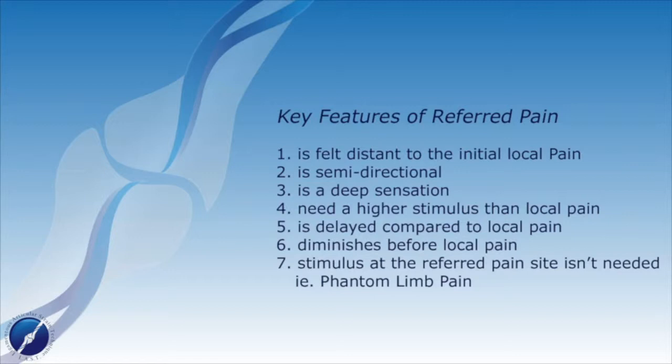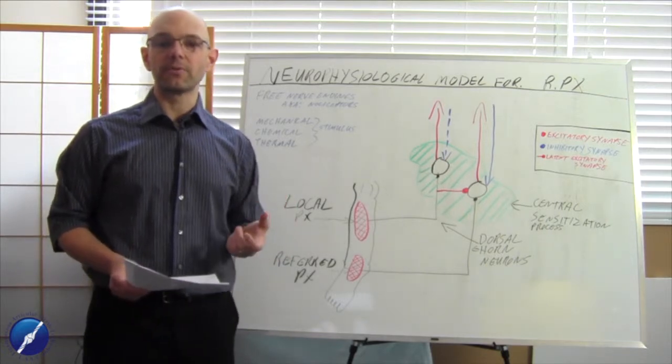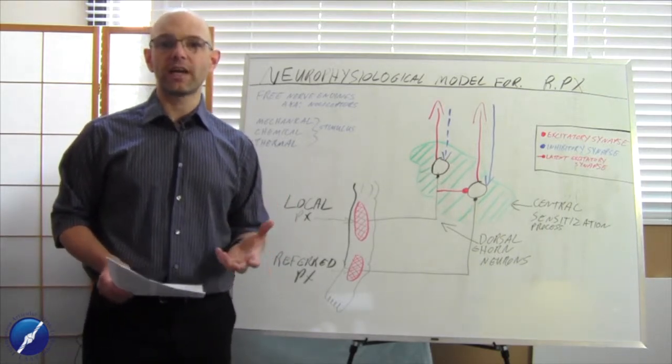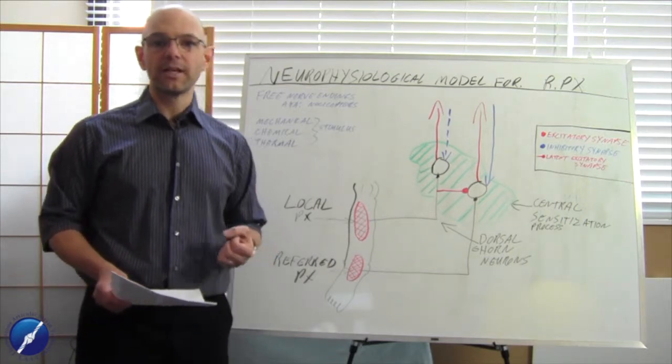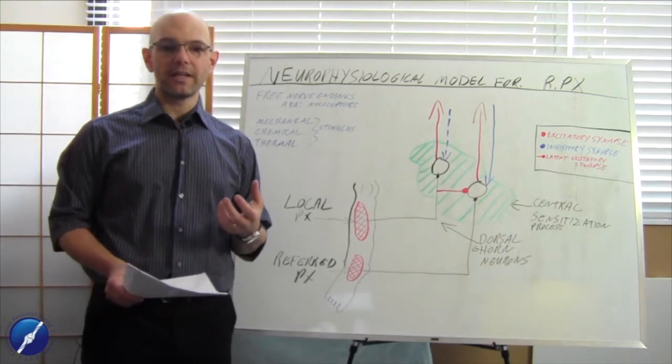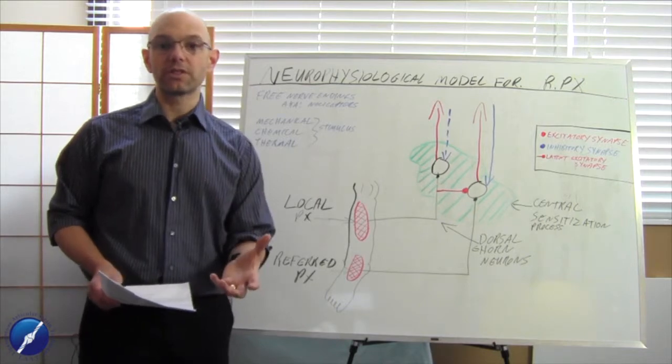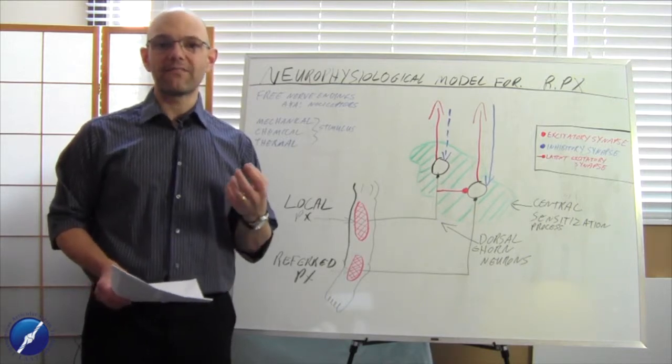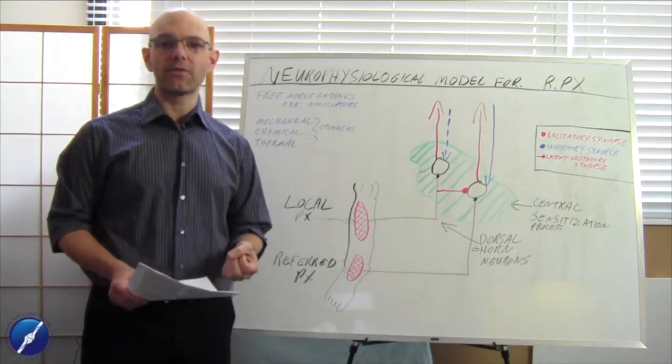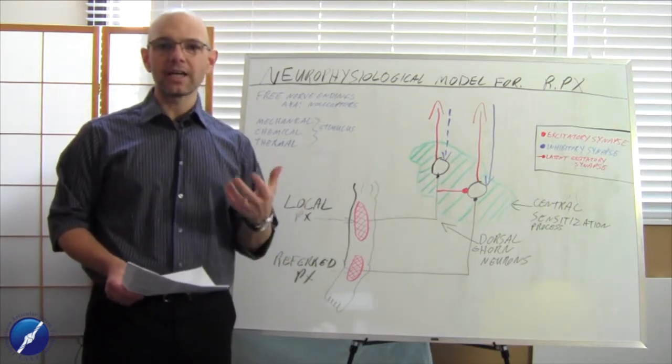The stimulus for the referred pain site isn't really needed but it might increase the referred pain feeling or sensation. Now this prime example I can use, I've got two examples. First example is for patients that have had some type of amputation. Now we've all had patients that comment or complain of a phantom limb pain. You know, there's no structure that's there but they feel that referred pain down through that area, so there's no stimulus that is required down through that area.